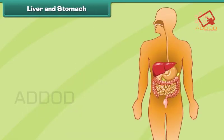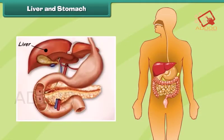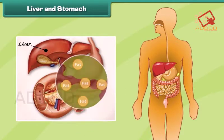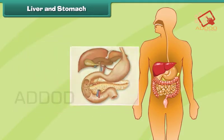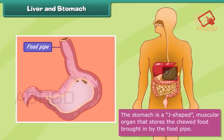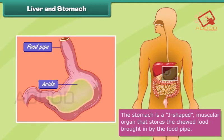Liver and stomach: the liver is a secretory organ that produces many juices that help in digesting food. The stomach is a J-shaped muscular organ that stores the chewed food brought in by the food pipe. The food is digested in the stomach with the help of enzymes and acids present here.